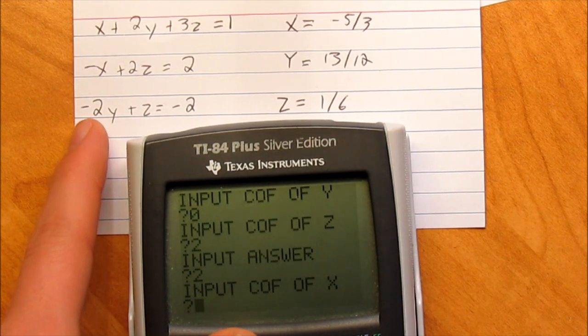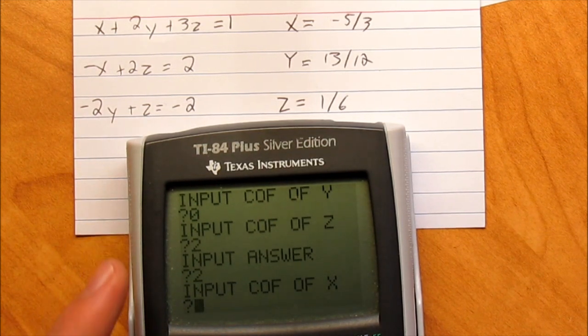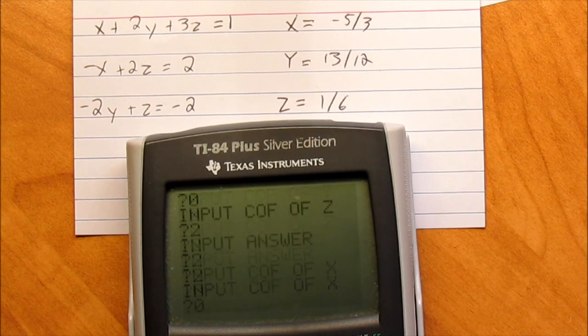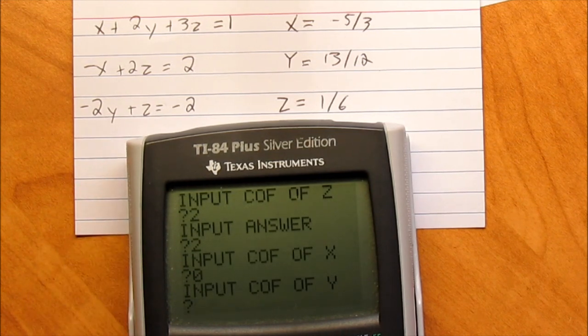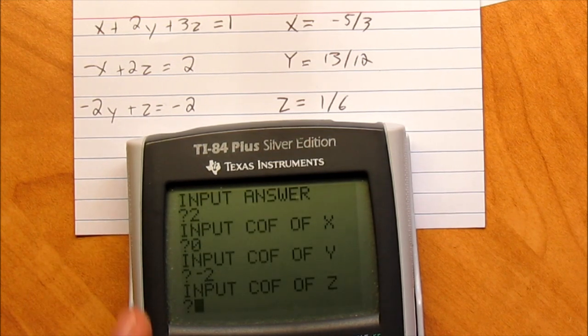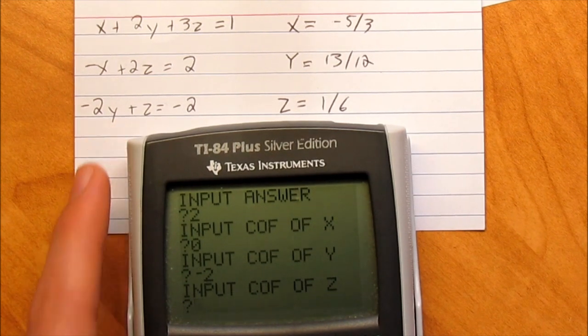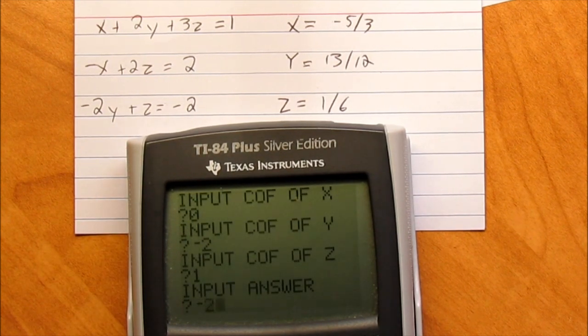Alright, and then this last one. There is no x. So you just put 0 in for x like you did before. Then the coefficient of y is negative 2. Z's coefficient is 1. And the answer is negative 2.